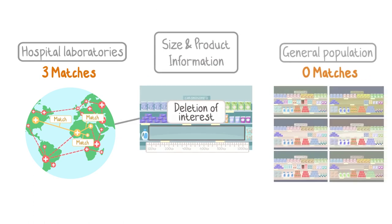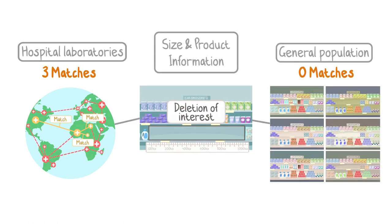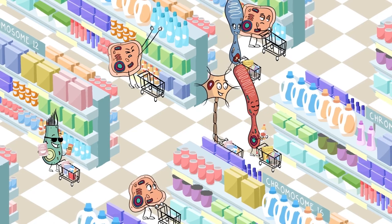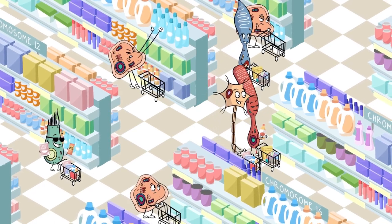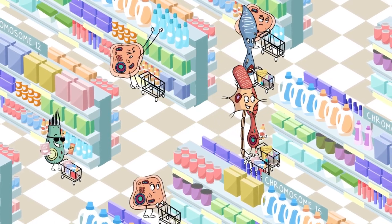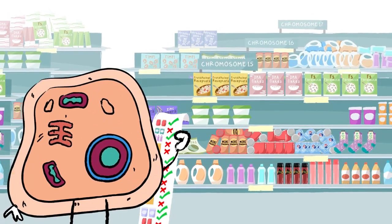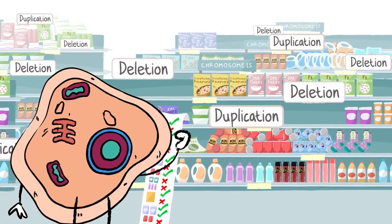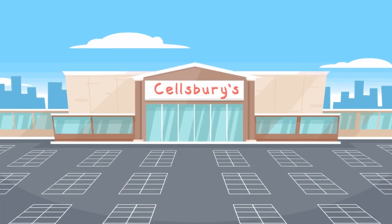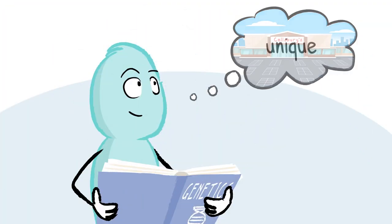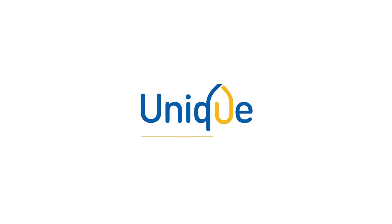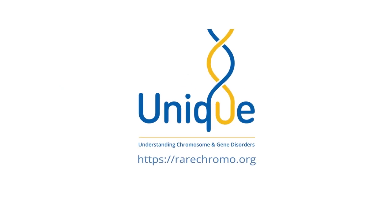Scientists put all of this information together to predict whether the chromosome change is going to affect the cells doing their shopping and ultimately their ability to do their jobs. An array CGH is important because studying how the products are organised in our supermarket can help us understand the combination of characteristics that make us all unique.